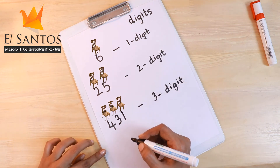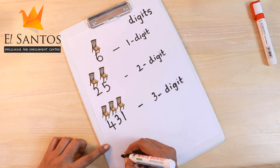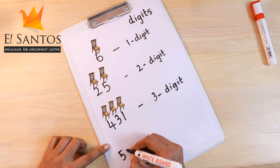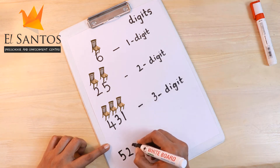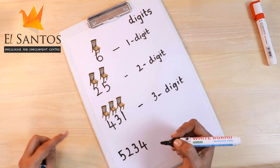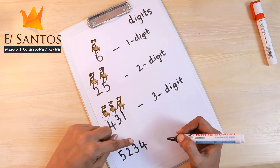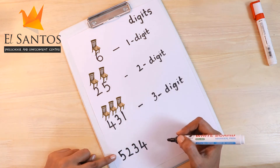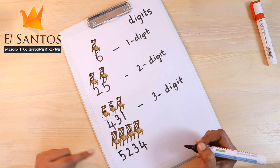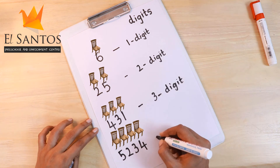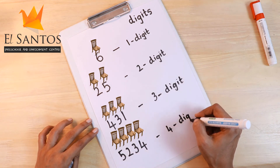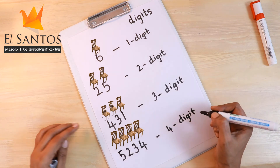Let me write a four digit number — five thousand two hundred and thirty-four. There are four numbers, so it needs four chairs. So we will call it a four digit number.